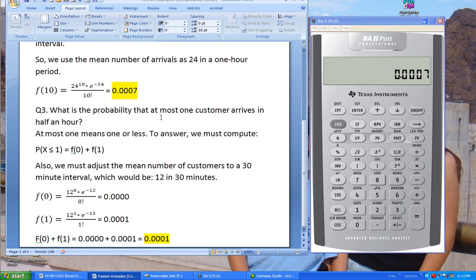What is the probability that at most one customer arrives in half an hour? At most one customer means one or less. At most one means either one or less or fewer customers. So to answer this, we must compute probability that x is less than or equal to one, which essentially means f of zero and f of one. So we need to do two computations and add them up.